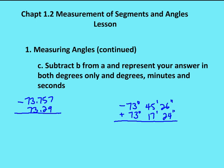The last part asks us to subtract the second value from the first and represent the answer in both degrees only and degrees, minutes, and seconds. If the value you are subtracting is larger, you put the larger absolute value on top. In case B, we had 73.757 degrees, and we wanted to subtract it from 73.29 degrees. Because 73.757 is larger, we place it on top and assign a negative sign, giving us negative 0.467 degrees.